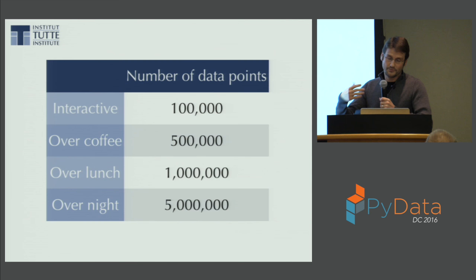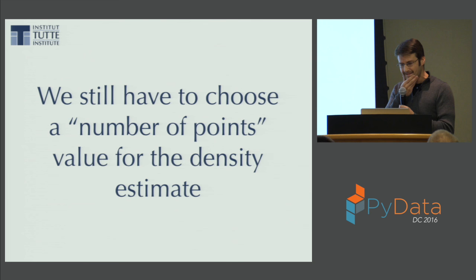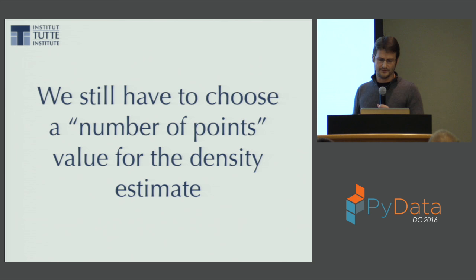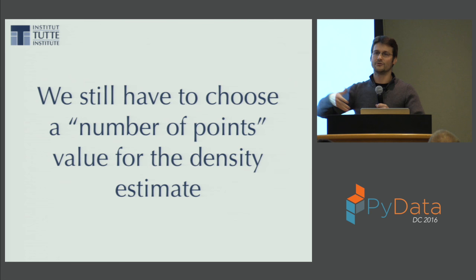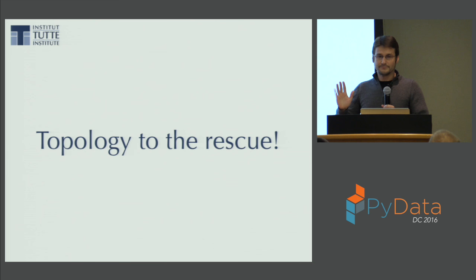Can we do better? The biggest remaining annoyance is still needing to choose min_points for the density estimate. We went from DBSCAN to HDBSCAN by computing for all possible epsilon values and integrating everything together. Can we play the same trick and vary the min_points parameter across its whole range too? Well, no — there's no obvious way to do that directly. But topology to the rescue. You can think of building the initial HDBSCAN tree in terms of persistent homology. If you're familiar with it, great; if not, don't panic — it's just a tool from algebraic topology that gives a clean mathematical description of what's going on.